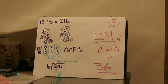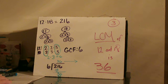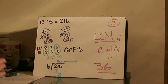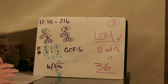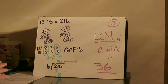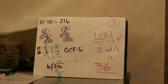This was Method B of finding the least common multiple. It is really useful when you have just two composite numbers. So if you're asked to find the least common multiple of two composite numbers, this is a good method to use.